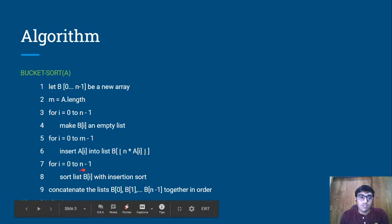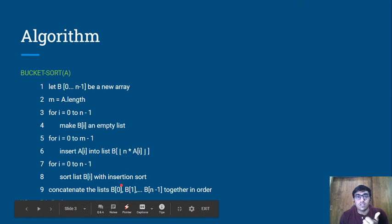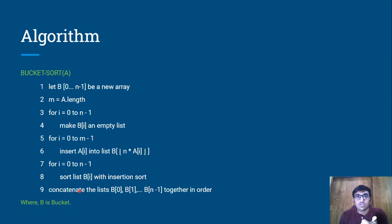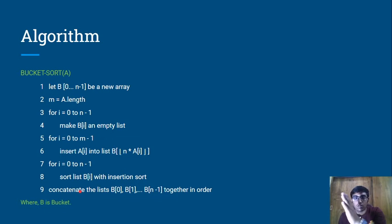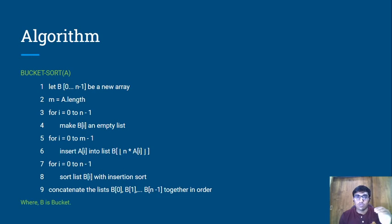Now for each bucket we sort each individual bucket using either insertion sort or merge sort. After sorting each individual bucket, we concatenate them in order — first all elements from the first bucket, then the next bucket, and so on.